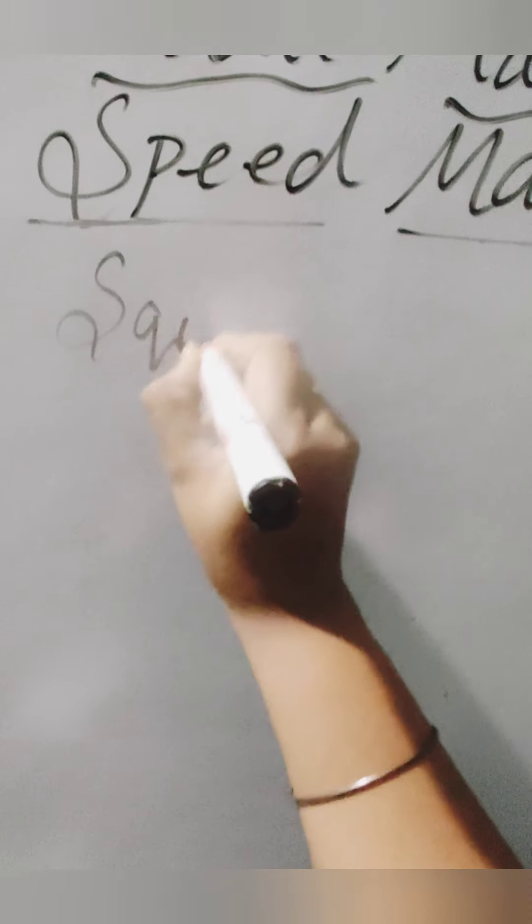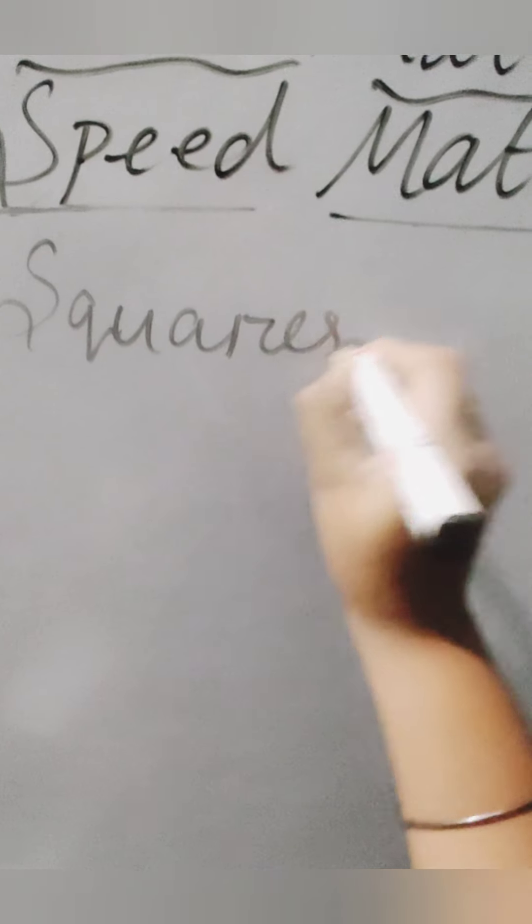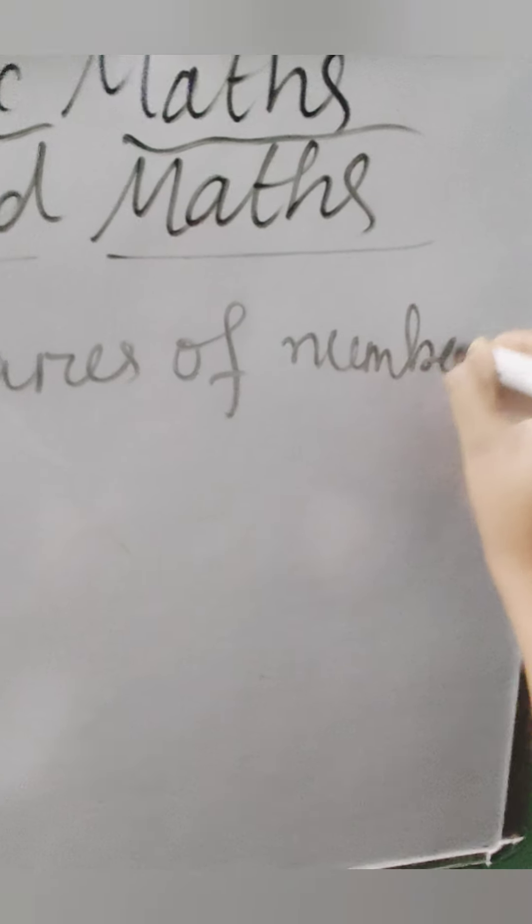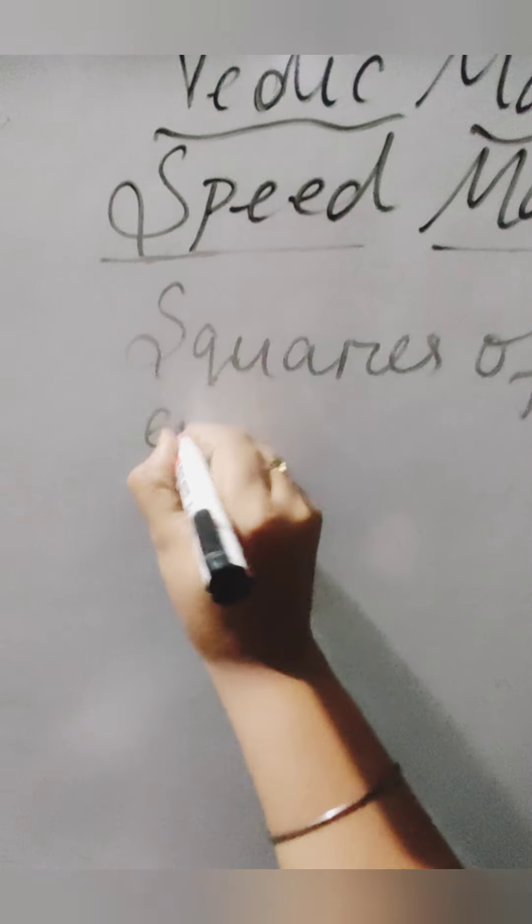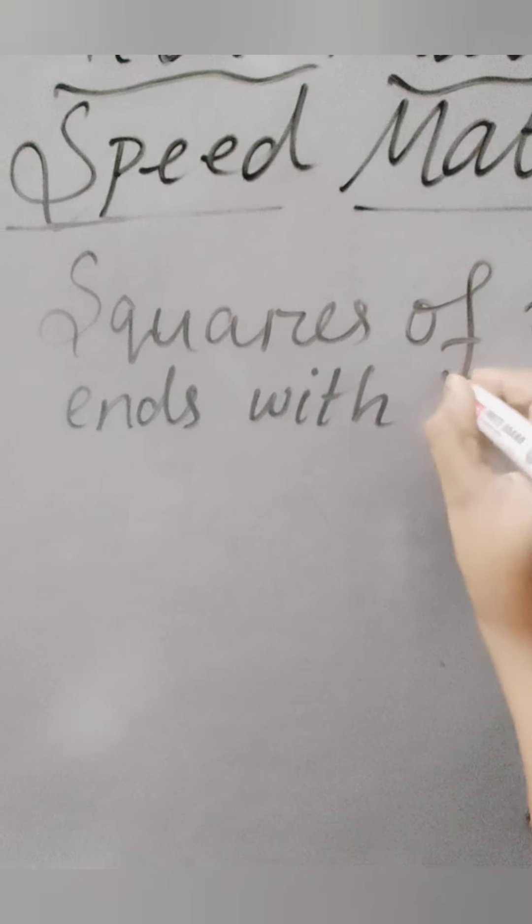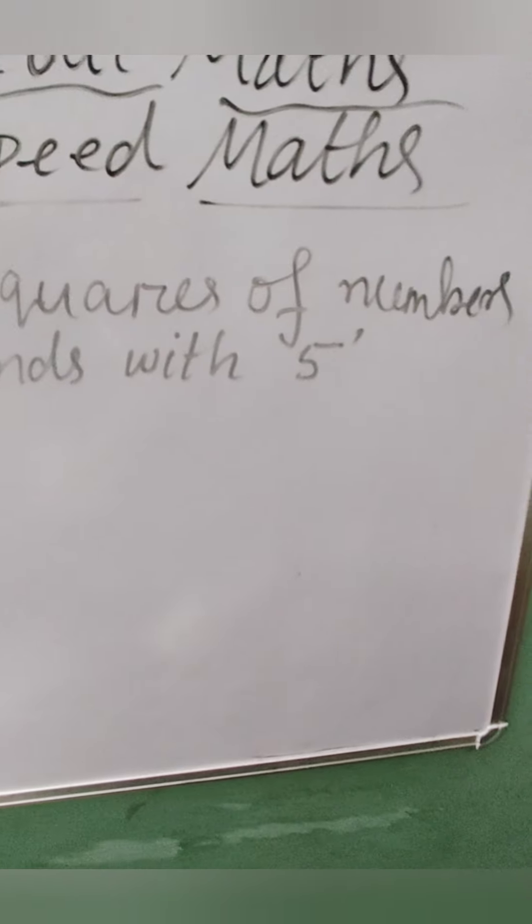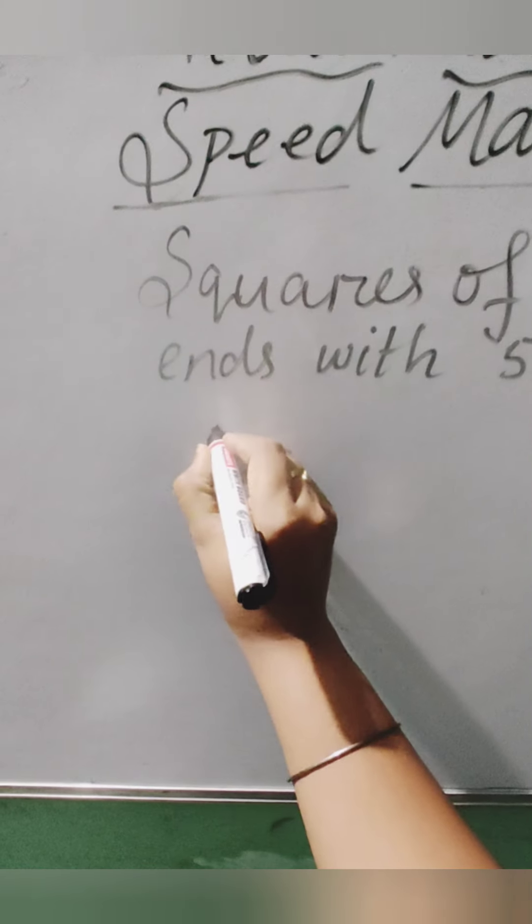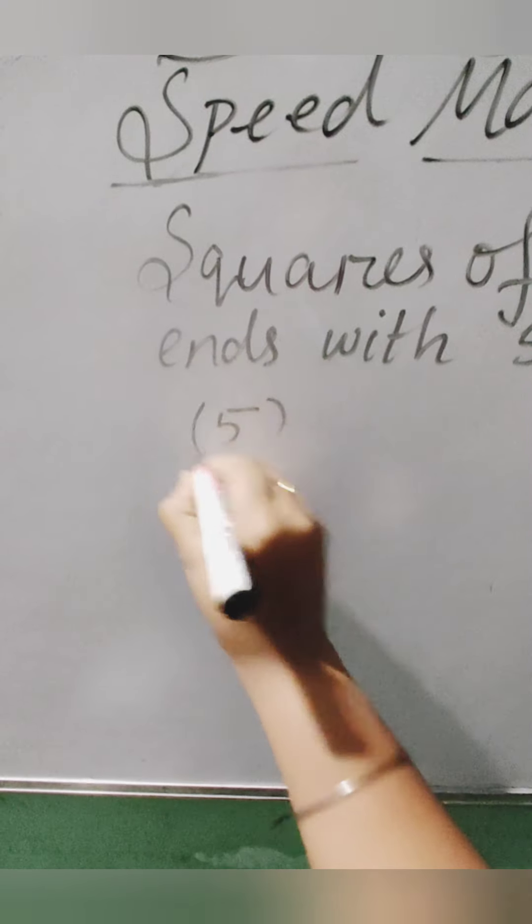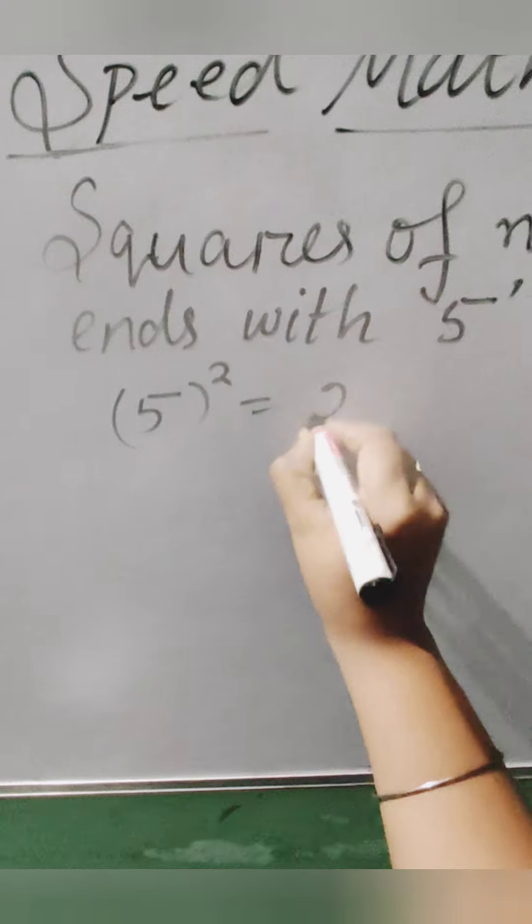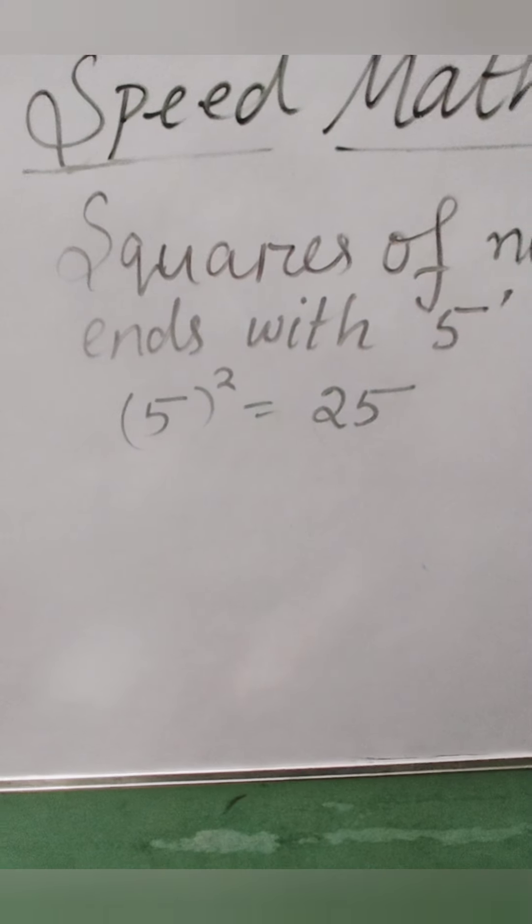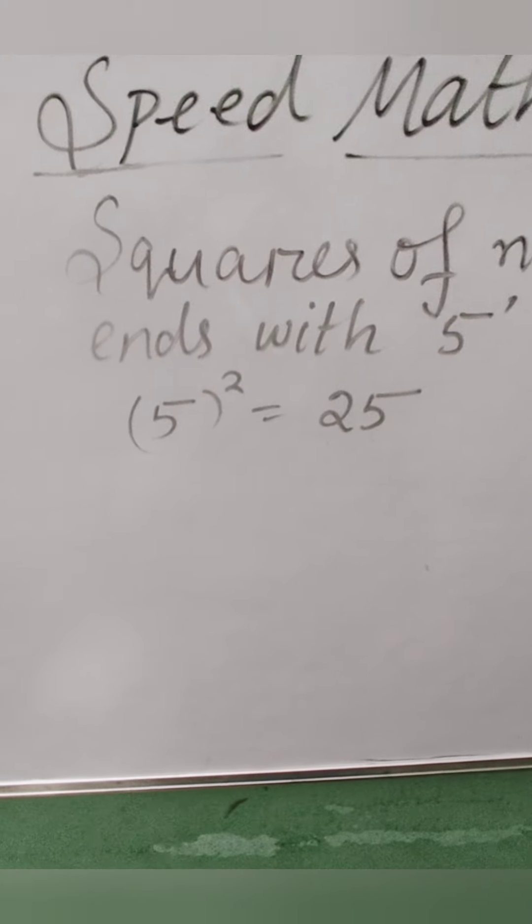Today we are going to find the squares of the numbers that end with 5. Yes, only with 5. There are some tricks. As we know, 5 squared is equal to 25, so keep that one in your mind at first.